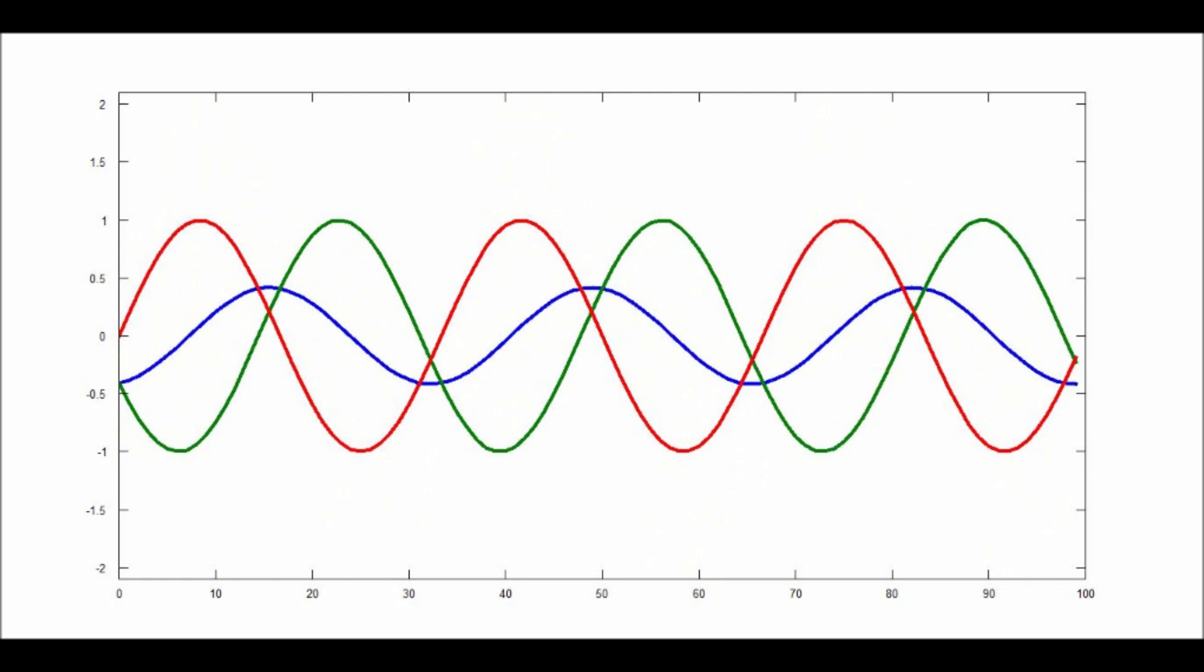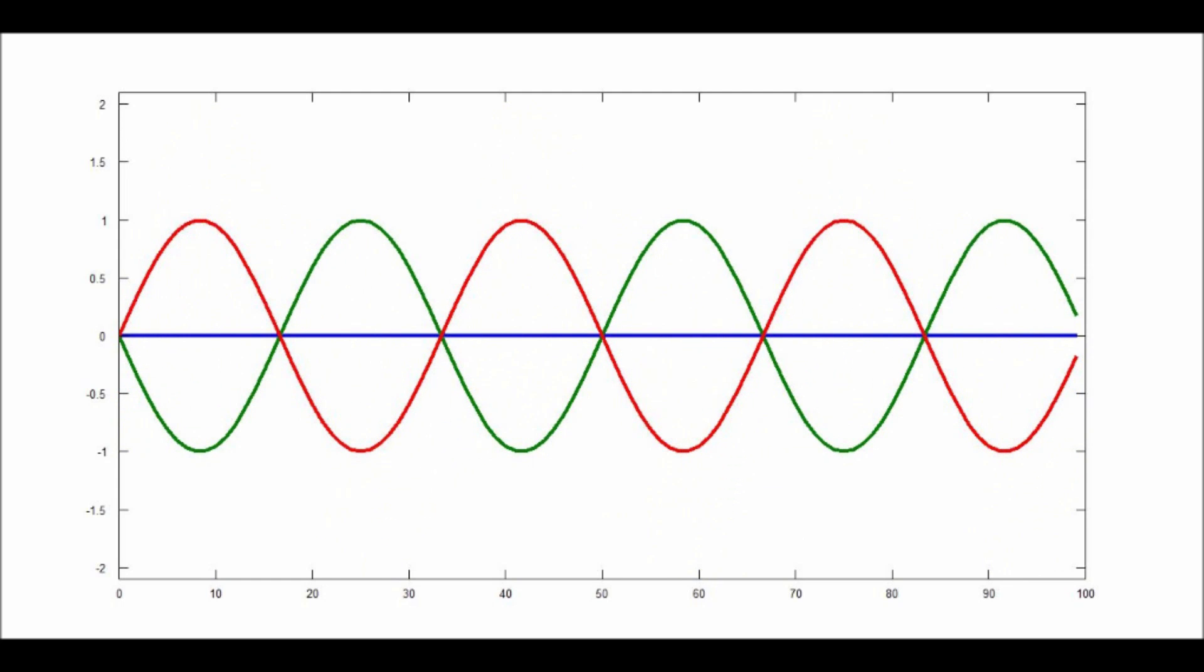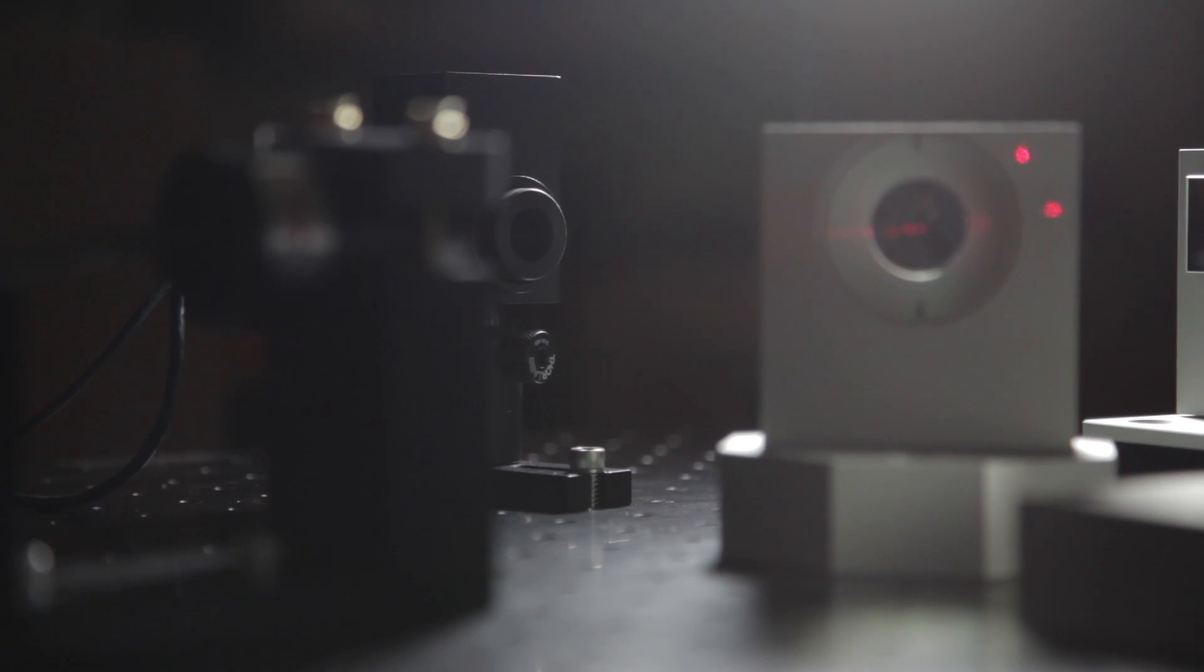If we phase shift one of these waves 180 degrees, the interference would then be completely destructive. Notice each peak aligns with an equal but opposite trough, and the resulting wave is zero at all points. The laser beams completely cancel each other out, and the photodetector measures no light.